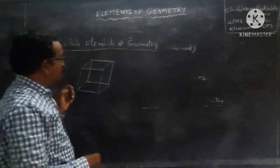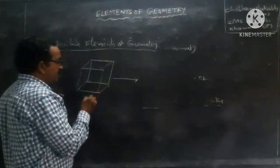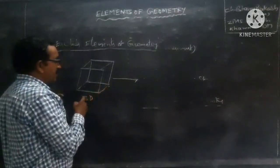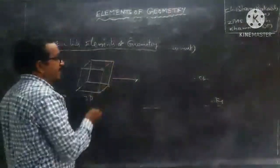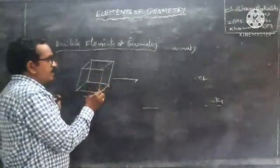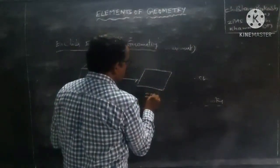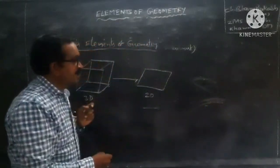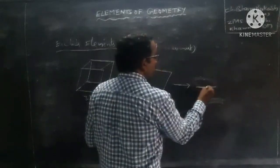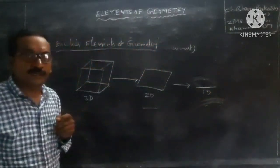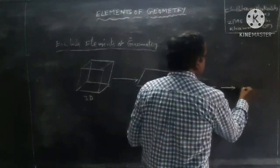Observe this 3D diagram — it has lines as edges and three dimensions: length, breadth, and height. If you remove the height, you get a surface with two dimensions: length and breadth. If you remove the breadth, you get a line with one dimension. And if you remove the length from the line, you get a point — it has no dimensions.